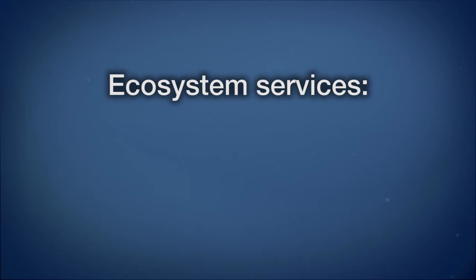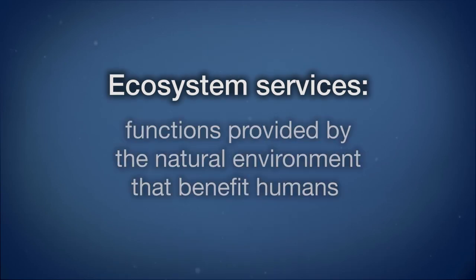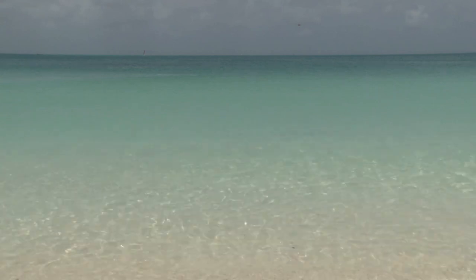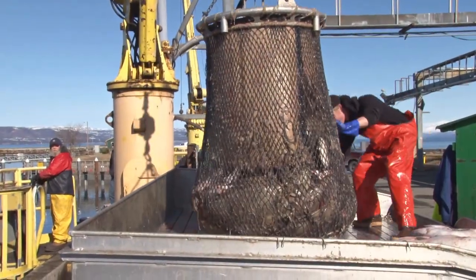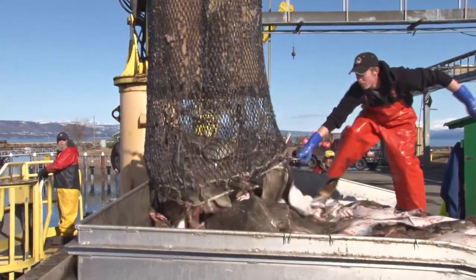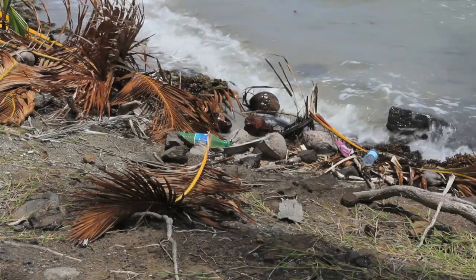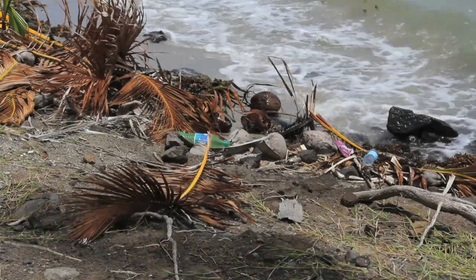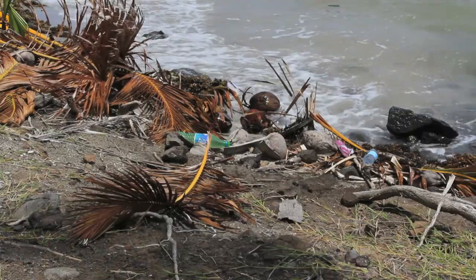Natural environments provide something called ecosystem services. Ecosystem services are functions that the natural environment provides that are important to human life. Clean water, clean air, fish, and food crops are the result of ecosystem services. If we degrade or destroy our natural systems, we may very well impair their ability to provide ecosystem services.